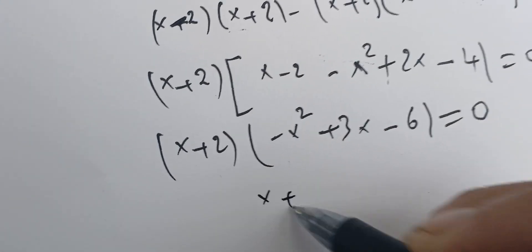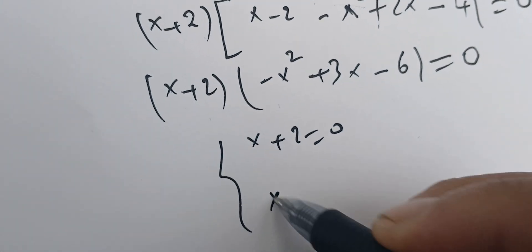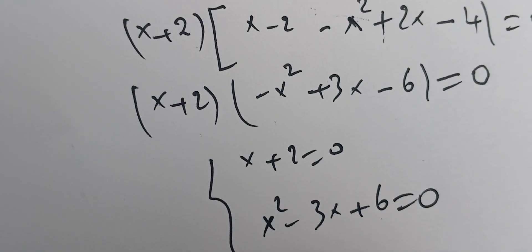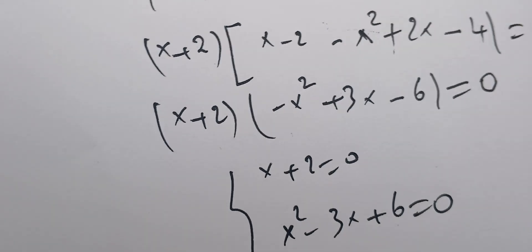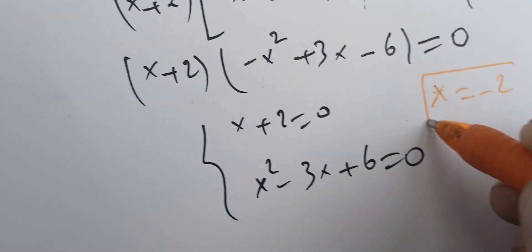I have either x plus 2 equals zero, or I'll take the minus outside so I have x squared minus 3x plus 6 equals zero. From here I see that x equals minus 2 is a solution. We tried it and found it by trial and error.